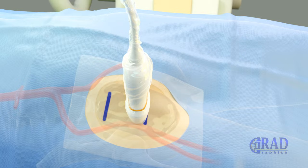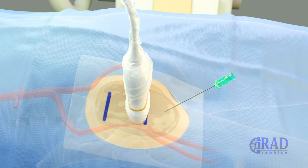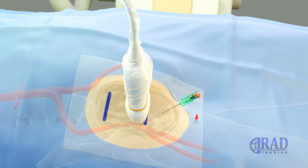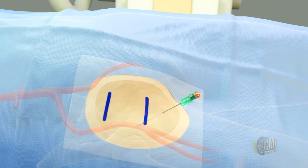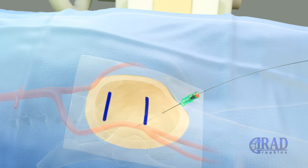Then, the right common femoral artery is accessed under ultrasound guidance using a micropuncture needle. Once blood return is noted, a microwire is advanced through the needle into the right common femoral artery.